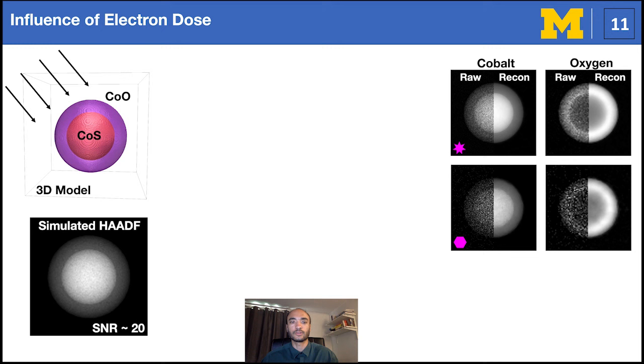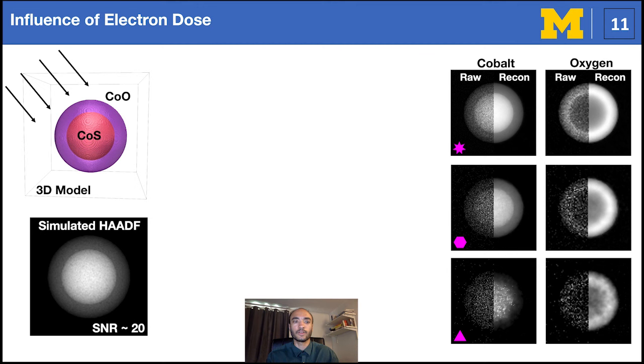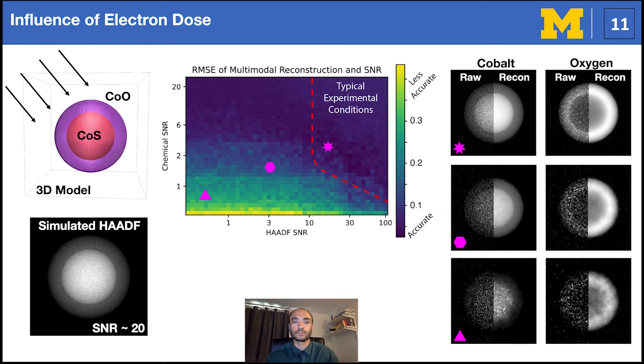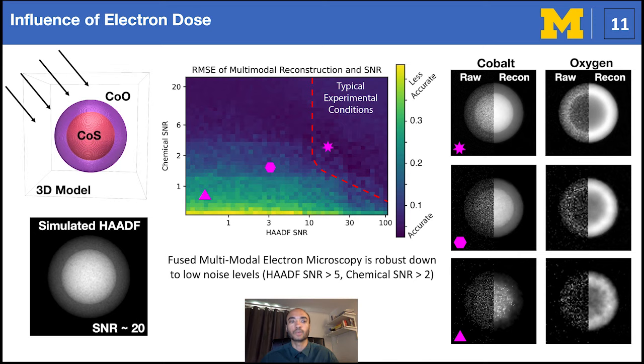We can extensively manipulate the HAADF and chemical signal-to-noise ratios to produce this phase diagram, where each pixel represents the concentration's root-mean-square error, or RMSE. Overall, we see accurate quantification is guaranteed as long as HAADF's signal-to-noise is sufficiently high, which is common for typical experimental conditions.